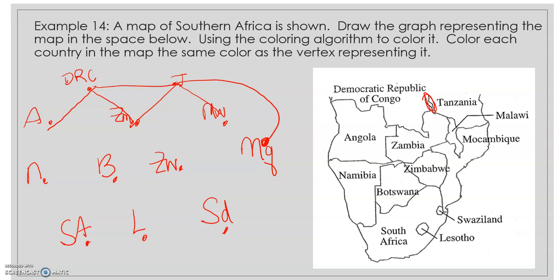Angola touches Democratic Republic of the Congo, Zambia, and Namibia. Zambia touches Angola, Democratic Republic of the Congo, Tanzania, Malawi, Mozambique, Zimbabwe, and Namibia.